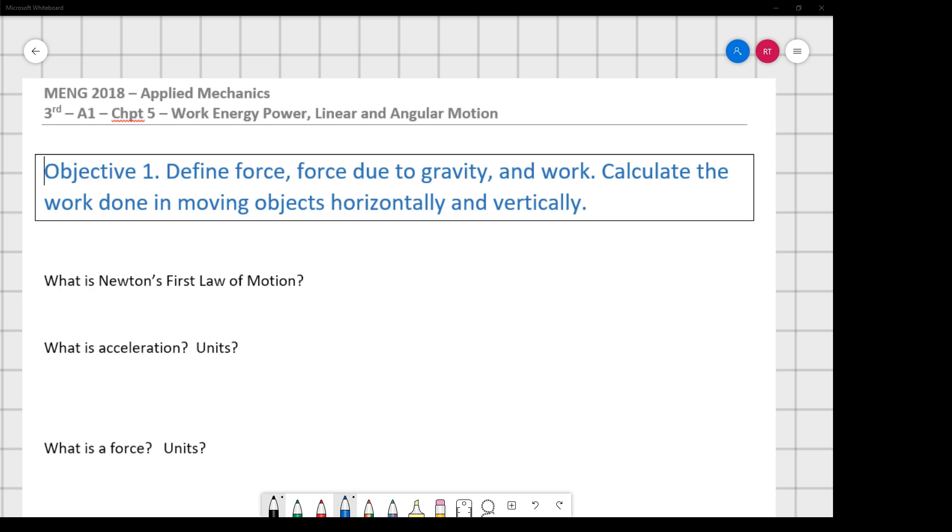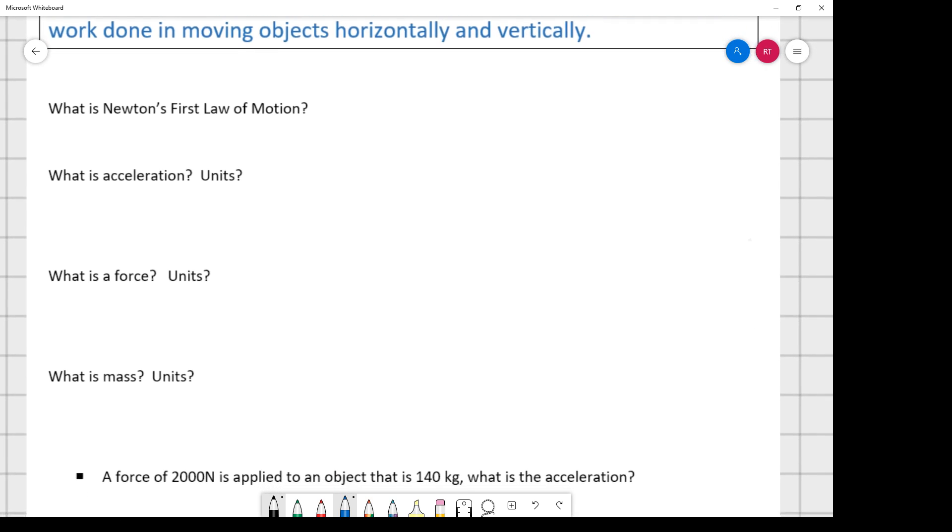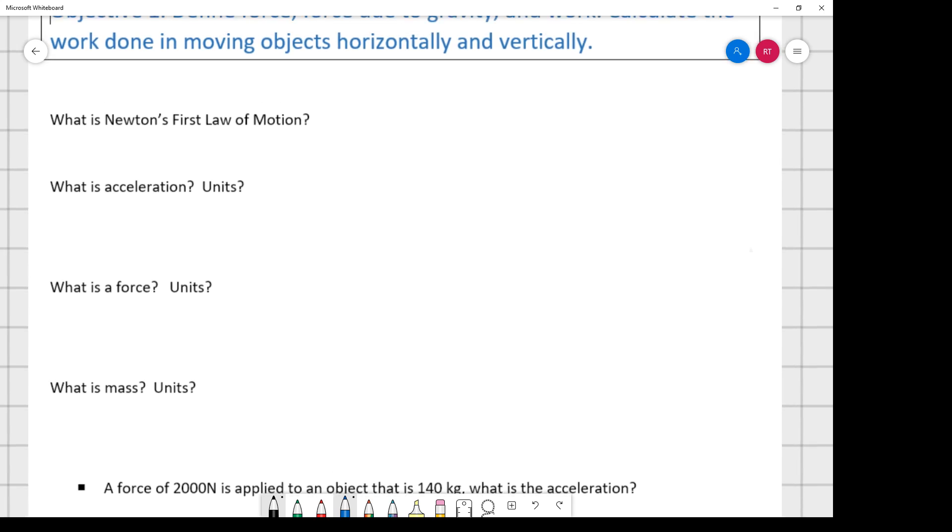So in this chapter, objective one, define force, force due to gravity and work, calculate the work done in moving objects horizontally and vertically. All right, so first thing, what is Newton's first law of motion?